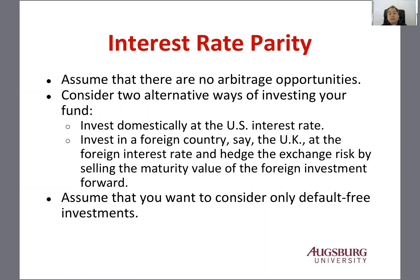The first option is to invest domestically at the United States interest rate. The second option is to invest in foreign currency — for example, in the UK at the foreign interest rate, which is the UK rate. You can hedge the exchange rate risk by selling the maturity value of the foreign investment forward. We also assume no arbitrage and no default.